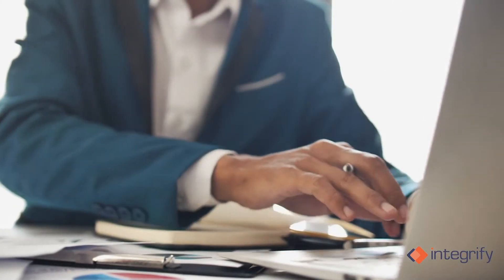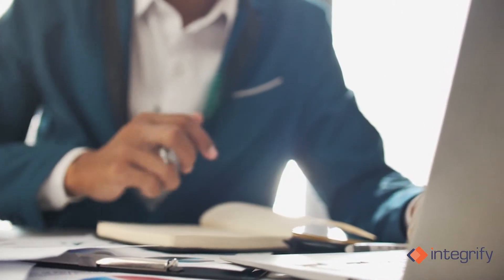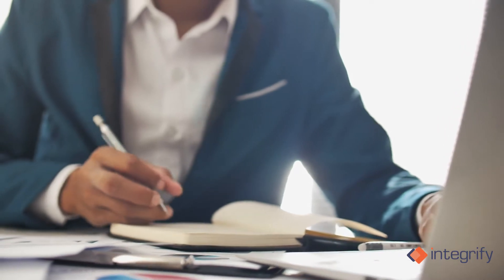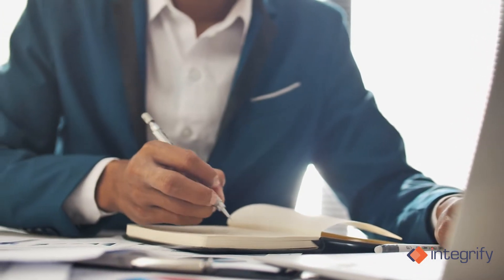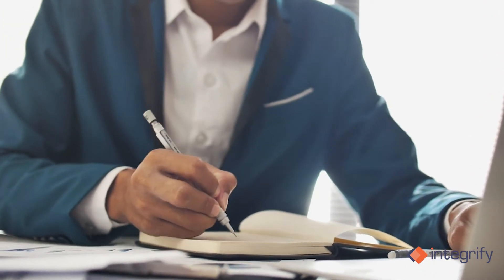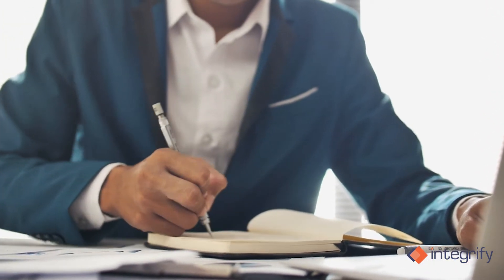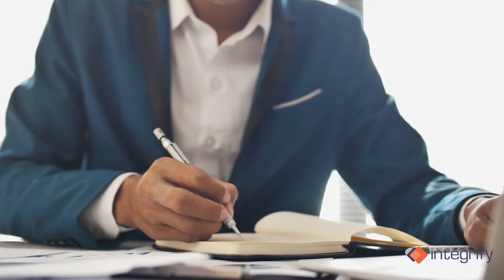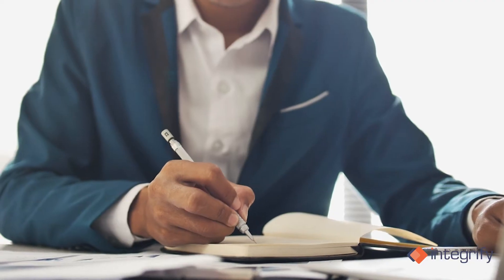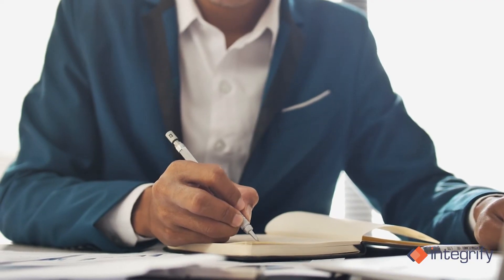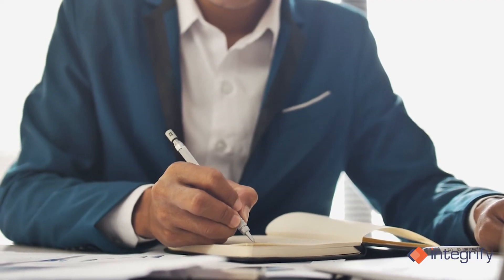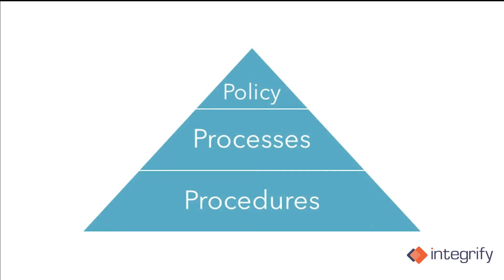Let's cover what should be included in process documentation. Policies, processes, and procedures are interconnected and aligned to achieve business outcomes. Ideally, they should all be in one place and reference each other: policy, process, and procedure.